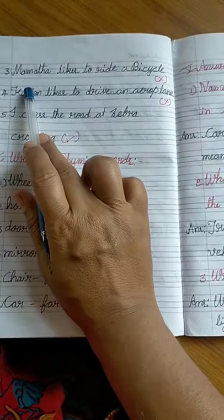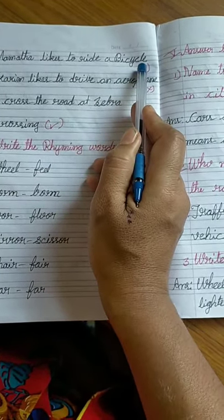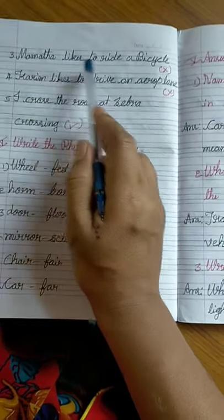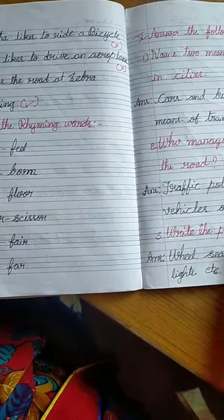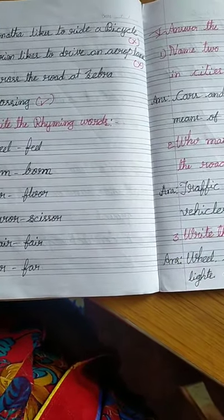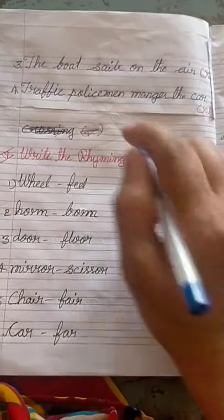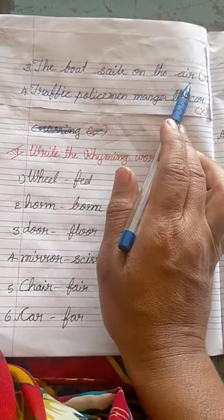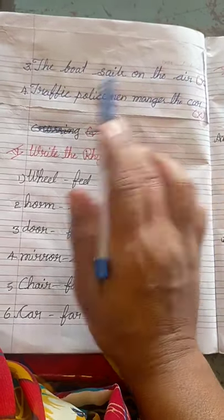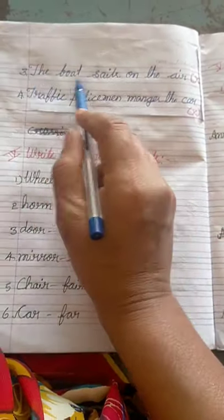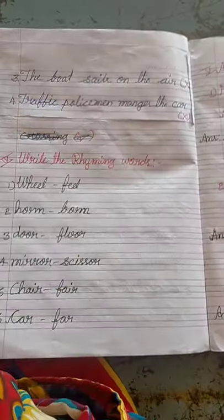Third: Mamata likes to ride a bicycle. Next, the boat slides on the air - is this right? No, it's wrong. Because the boat slides on the water, not on the air. So this one is wrong.